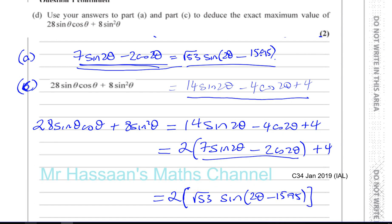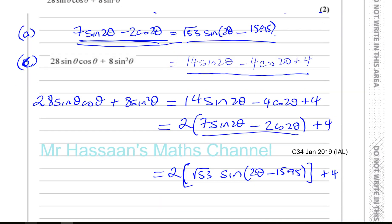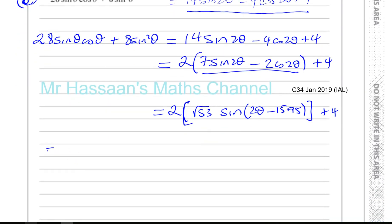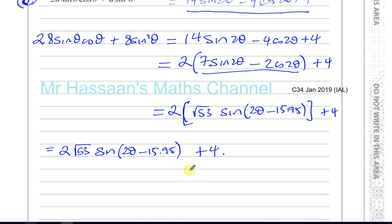Simplifying, I have 2 times root 53 times sine of (2θ minus 15.95°), and then all of that plus 4. With this form, I can find the maximum value of the expression.